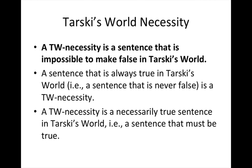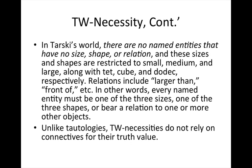A Tarski's World necessity is a necessarily true sentence in Tarski's World — a sentence that must be true. In Tarski's World, recall, there are no named entities that have no size or shape. Every named entity must have a size and a shape, and these are restricted to respectively small, medium, and large, and tet, cube, and dodek. Unlike tautologies, Tarski's World necessities do not rely on connectives for their truth value; instead, they rely on the restricted world of three sizes and three shapes.